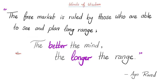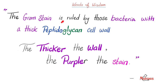Now we'll talk about the gram-stain technique. The gram-stain is ruled by those bacteria with a thick peptidoglycan cell wall — the thicker the wall, the more purple the stain. If you're gram-positive, you have a thicker wall and appear purple. If you're gram-negative, you have a thinner wall and appear pink — less purple.